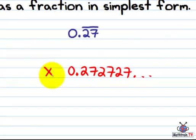So here's what we can do. So I can call this x, and then I can actually multiply both sides of this by a power of 10. In this case I'm going to use 100 because there's two digits that are repeating.